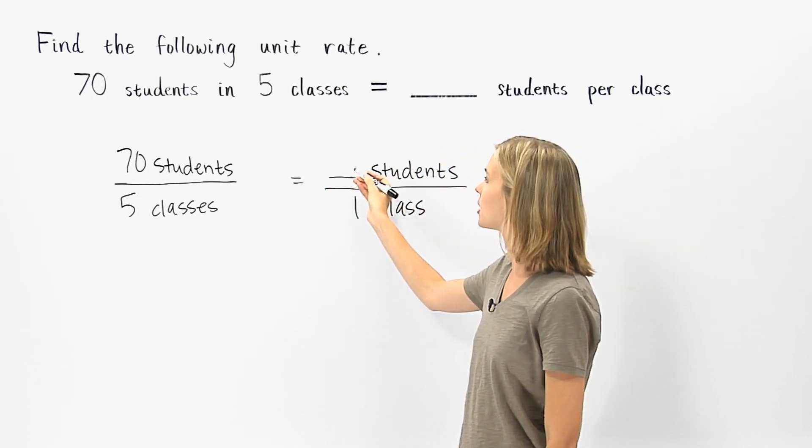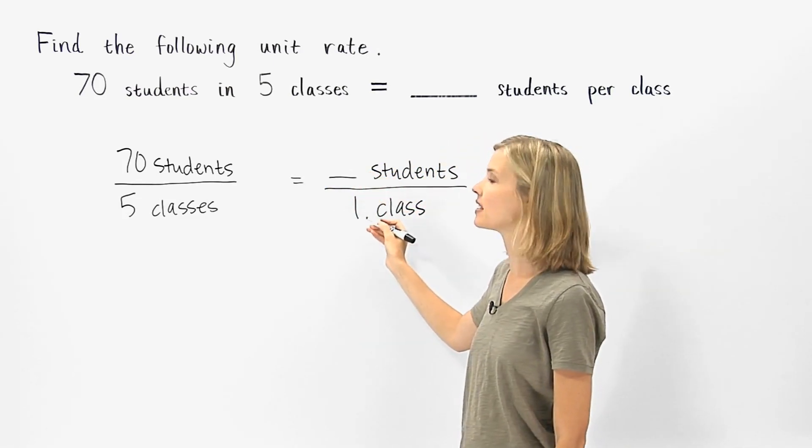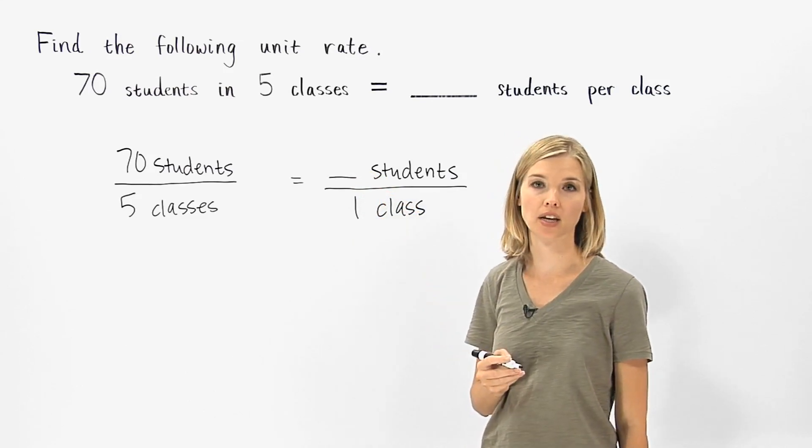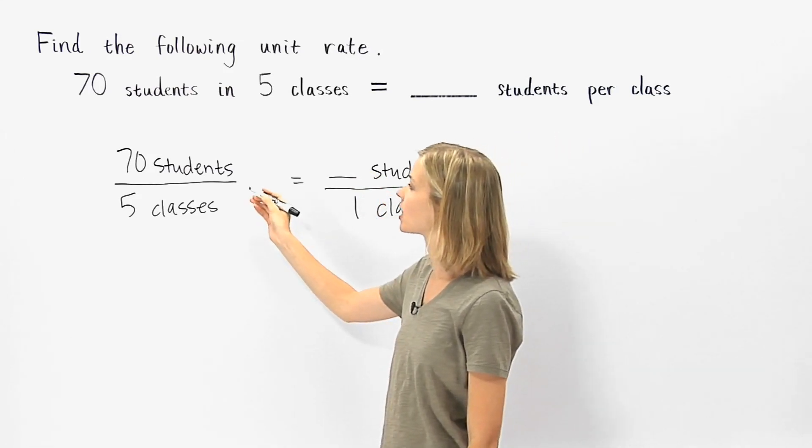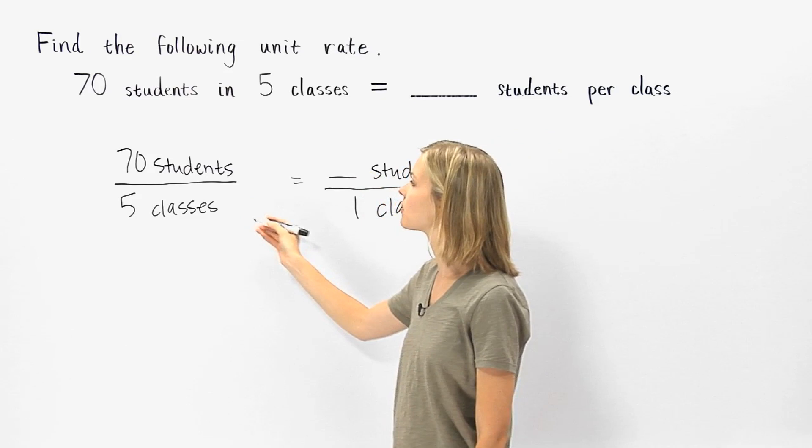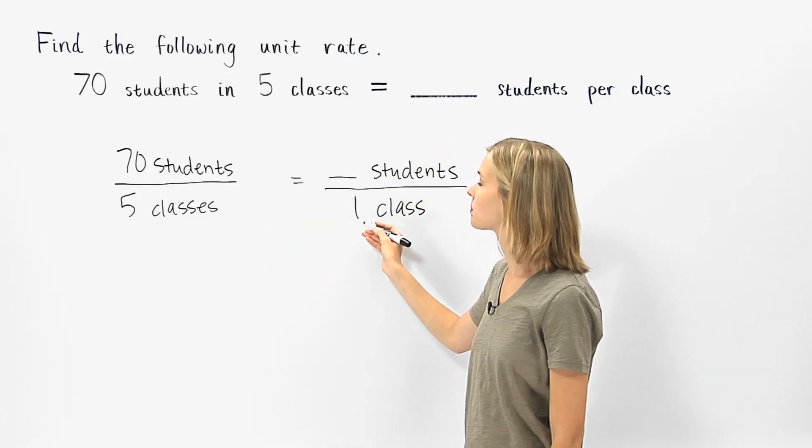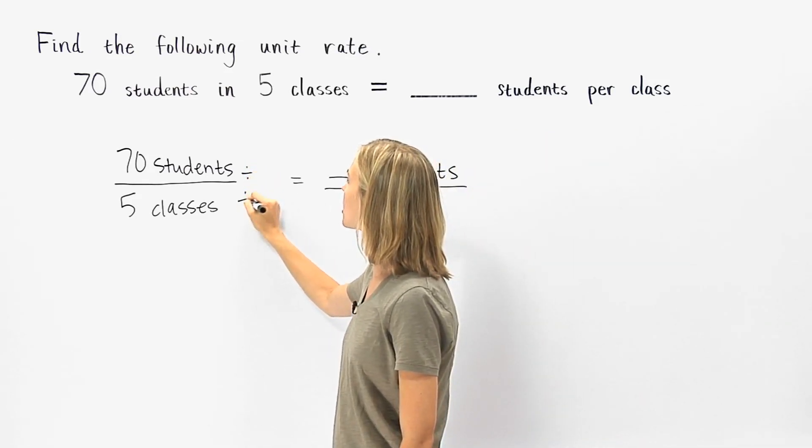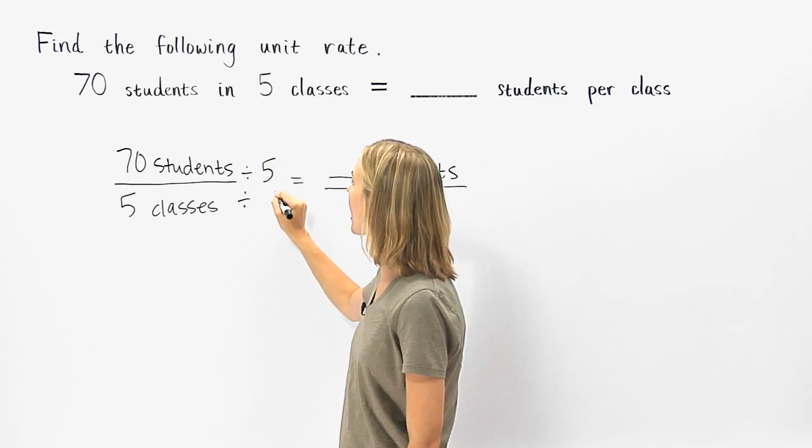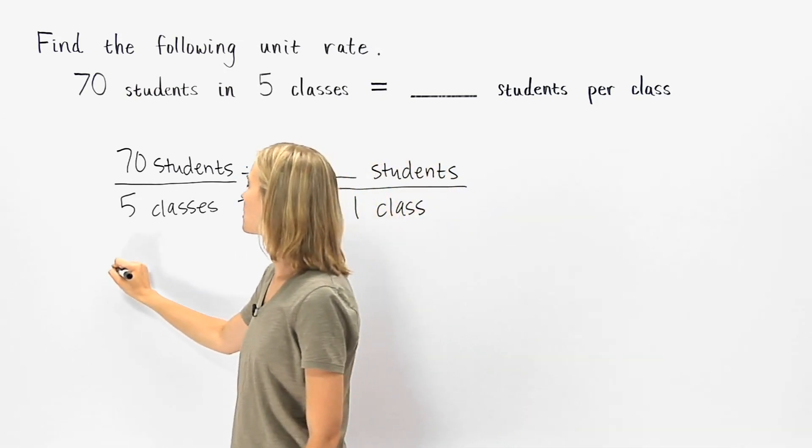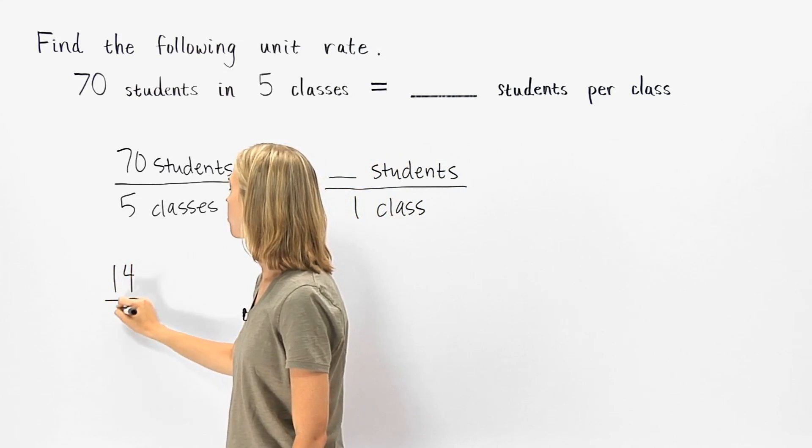Now to determine what goes in the blank, notice that we have a one in the denominator of our second fraction. So we need to find a fraction equivalent to seventy over five with a denominator of one. If we divide the numerator and denominator of seventy over five by five, we get the equivalent fraction fourteen over one.